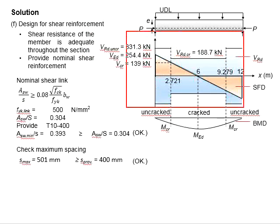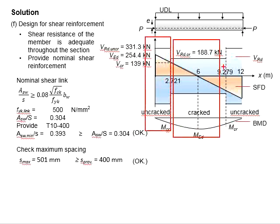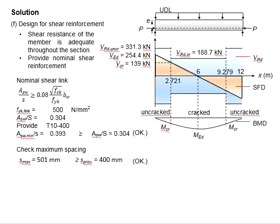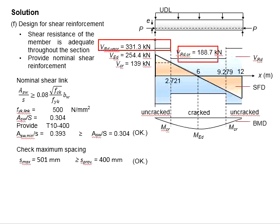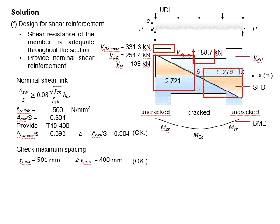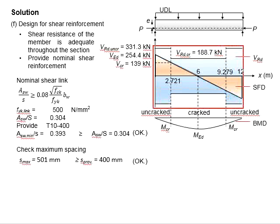This diagram represents the calculated outcome. There will be cracked regions and uncracked regions. In terms of loading, VED is shown here and VCR is here. In terms of shear capacity, VRDC for the uncracked regions and VRDC for the cracked regions are shown. The shear resistance is always greater than the shear loads acting throughout the span. Therefore, nominal reinforcement is adequate for the entire section.